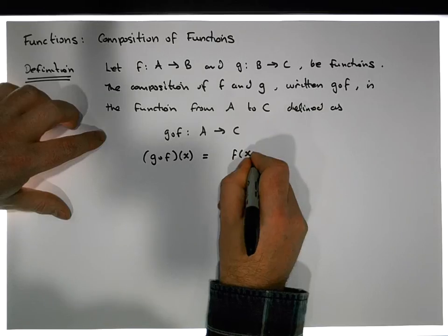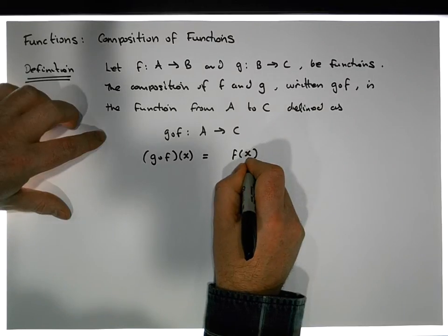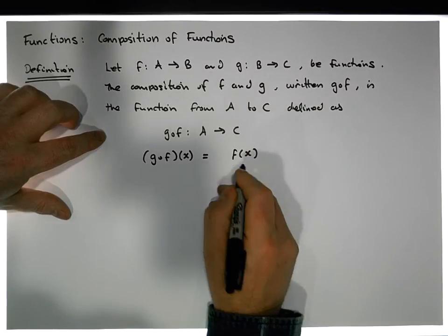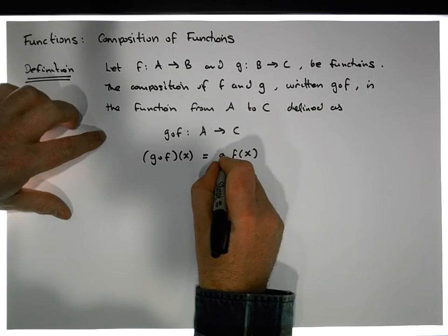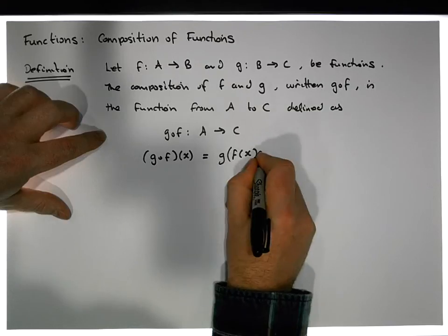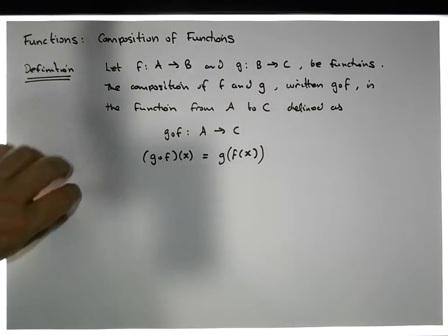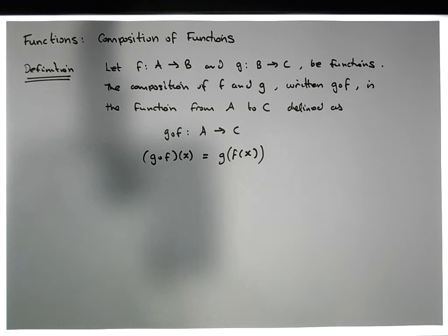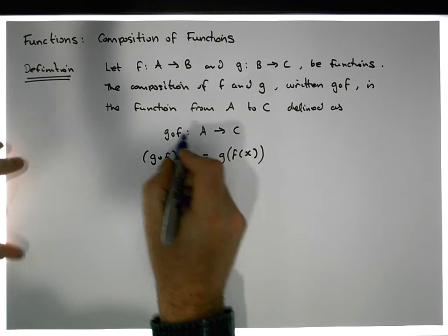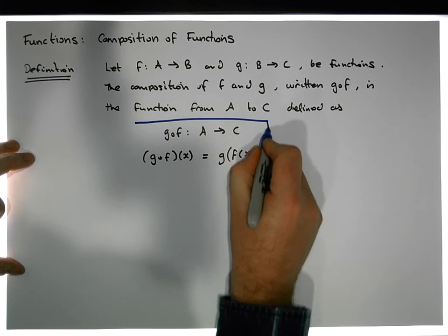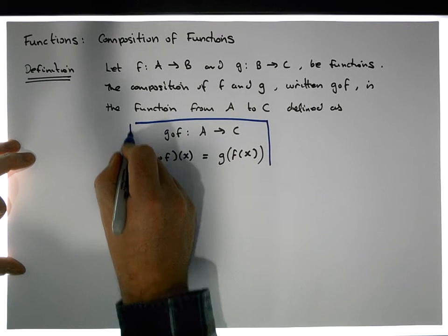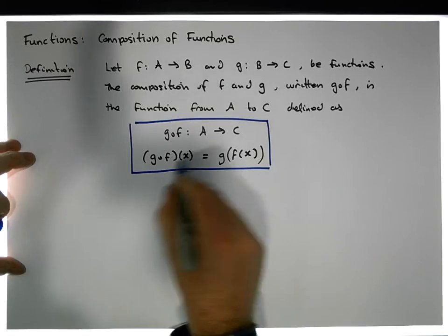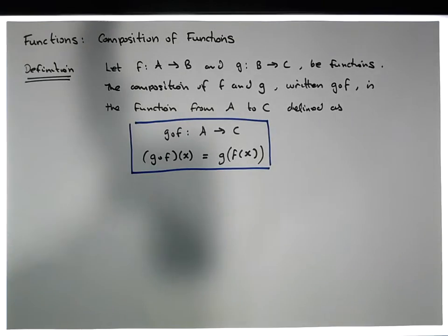What we do is we evaluate F for all values of X in its domain, and then we apply G to all values that have been evaluated by F of X. That's what we mean by composition of functions, and from a notation perspective let's have a look at a particular example.